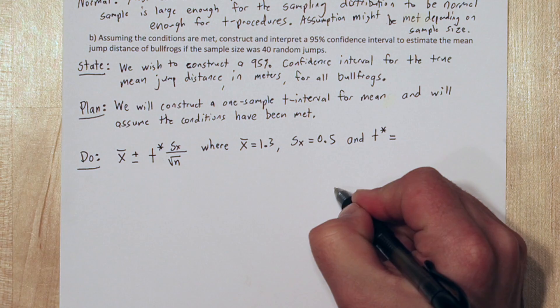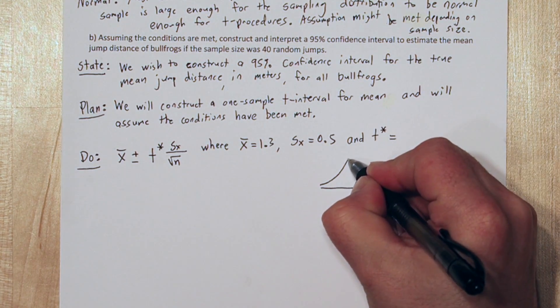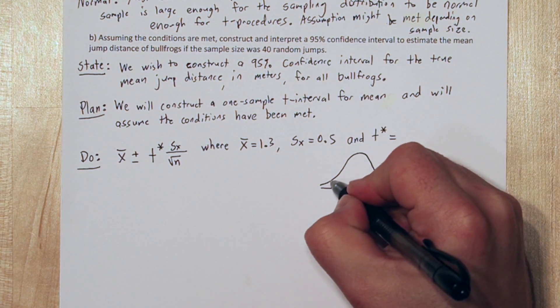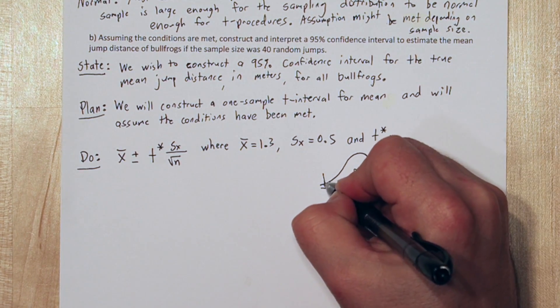Now we need to figure out what T star is, so let's draw a T distribution. We want the critical value T star that will cut off the middle 95% of the data.